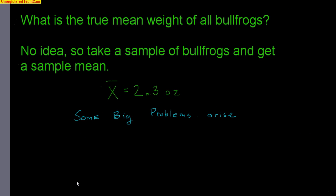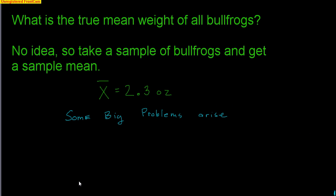We'll interpret by saying: I'm 95% confident that the true mean weight of a bullfrog is between blank and blank. Our sample showed 2.3, but that does not mean the true mean of all bullfrogs is also 2.3, because samples vary. This is my one sample that may differ from other samples.